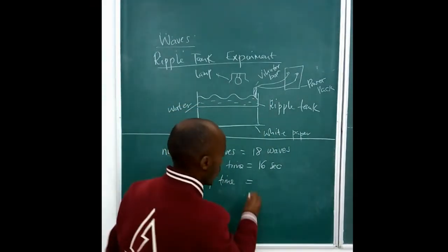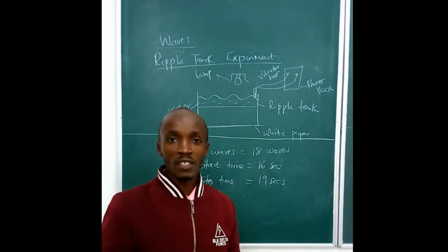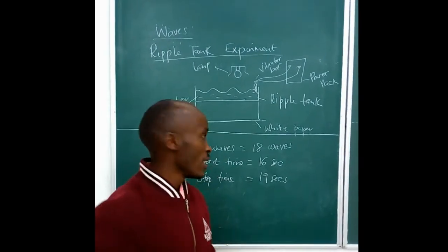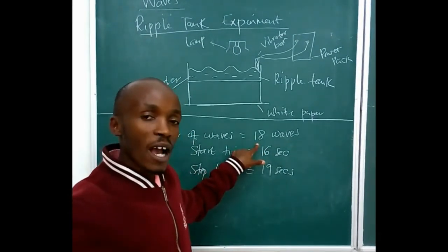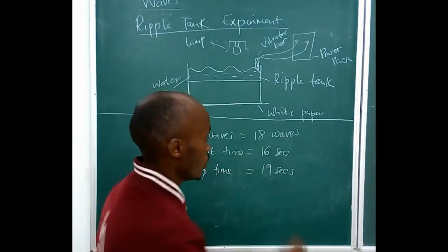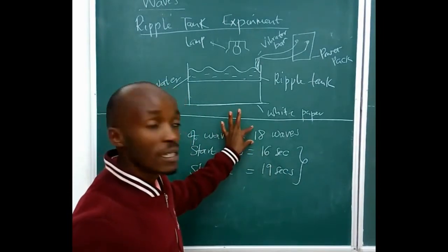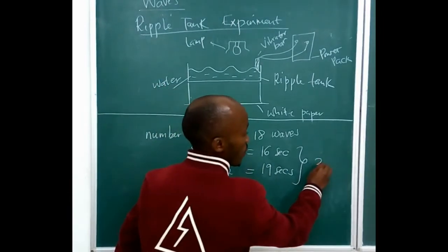And then we have the stop time, which is 19 seconds. Meaning, these 18 waves have been made within this span of time. So the time taken to make the 18 number of waves is 3 seconds.